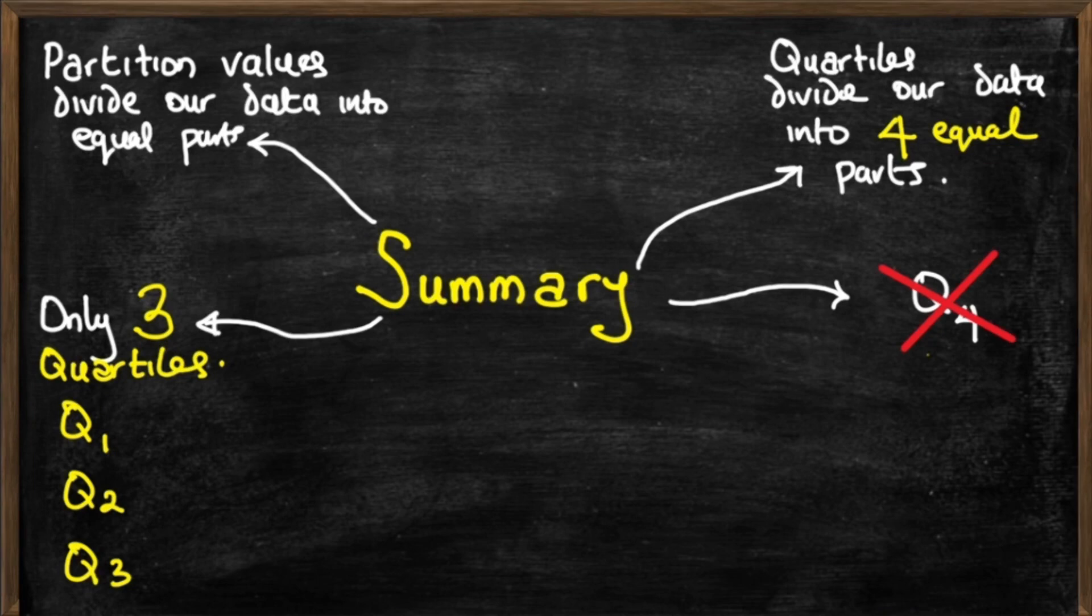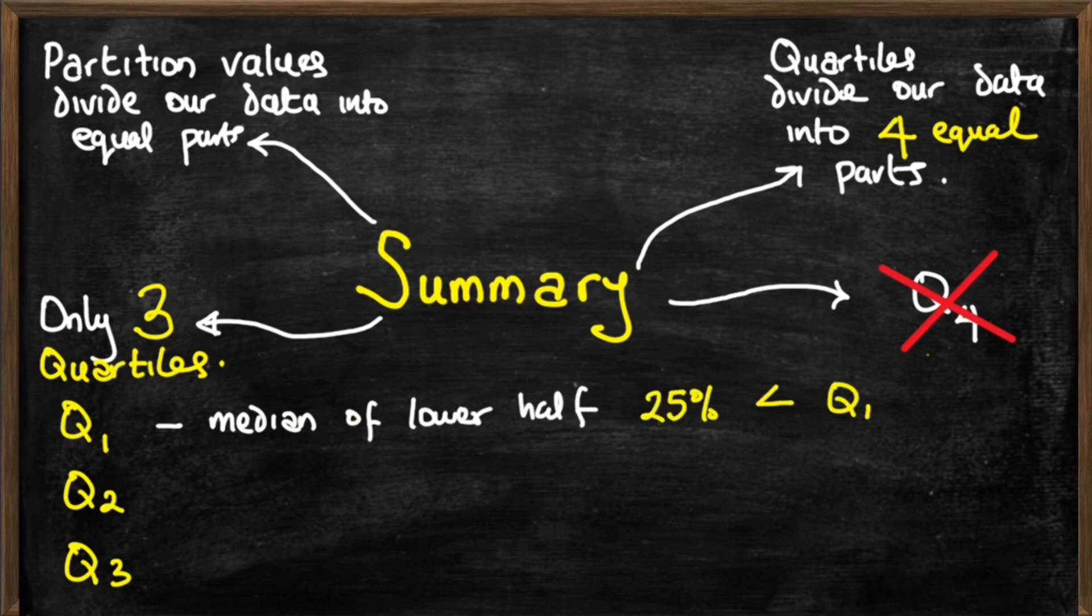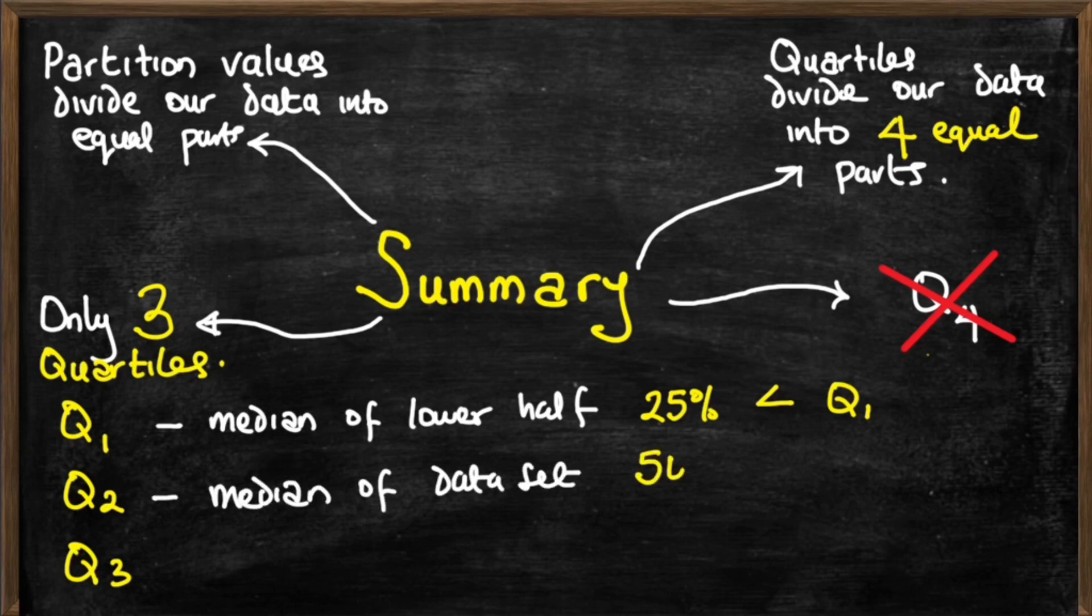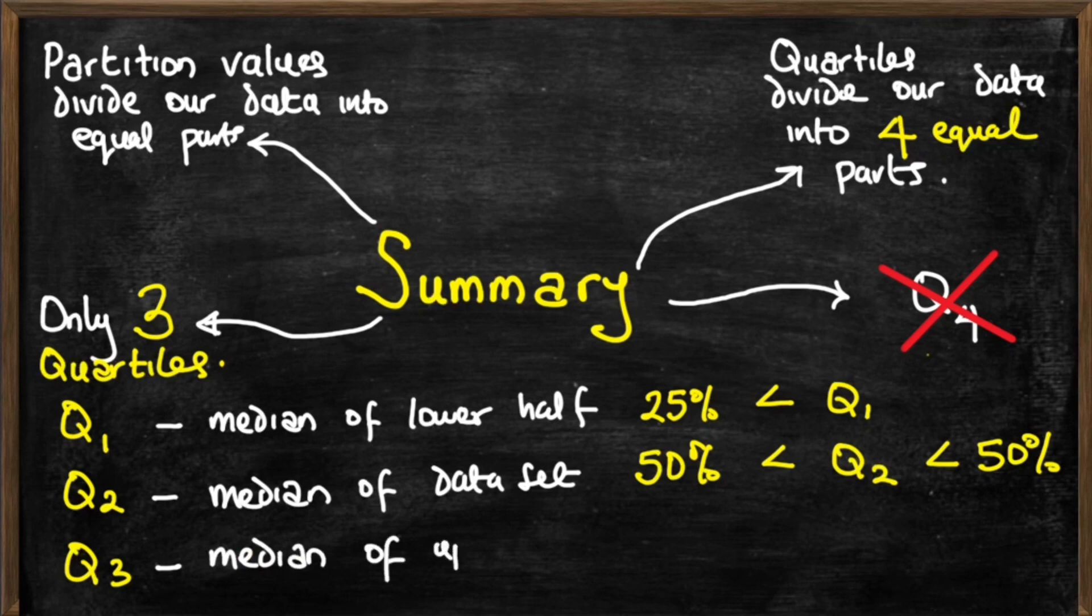The first quartile, Q1, is the median of the lower half of the data and 25% of all the data points are less than Q1. The second quartile, Q2, is the median of the entire data set and 50% of the values lie above and 50% lie below it. The third quartile, Q3, is the median of the upper half of the data set and 25% of the data points lie above the third quartile.